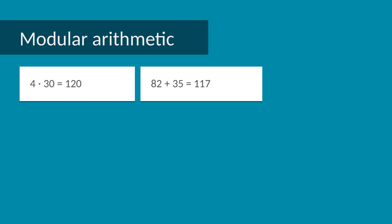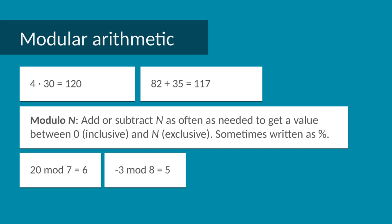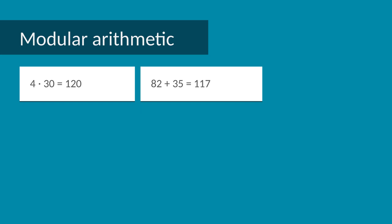We can do this by taking all results of operations modulo 100. You might have seen the modulo operation before. In simple terms, it means we'll add or subtract 100 from the result until we get a value that's between 0 inclusive and 100 exclusive. For example, 20 modulo 7 is 6, -3 modulo 8 is 5, and 82 modulo 101 is 82. So in the group of integers modulo 100, 4 times 30 is 120 which becomes 20, and 82 plus 35 is 117 but becomes 17.